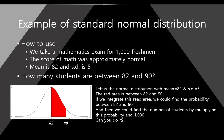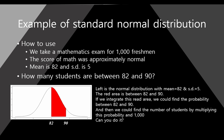I will let you know how to use it. First, we have an example and question. For example, we take a mathematics exam for 1,000 freshmen. The 1,000 freshmen's math score was approximately normal — it means that it follows the normal distribution shape. And here, we have two values: mean and standard deviation. The mean value was 82, and the standard deviation is 5. So we have a normal distribution with the mean value 82 and standard deviation 5. The question is: how many students are between 82 and 90?